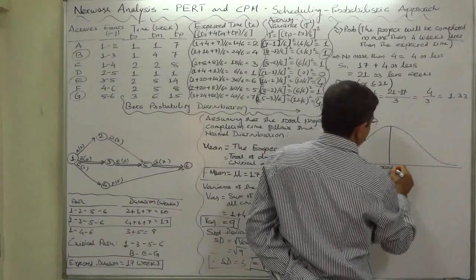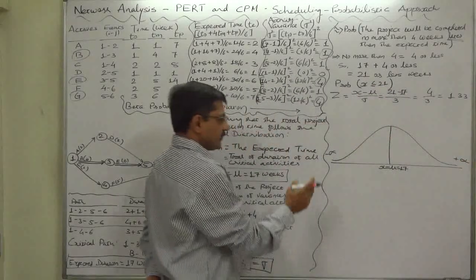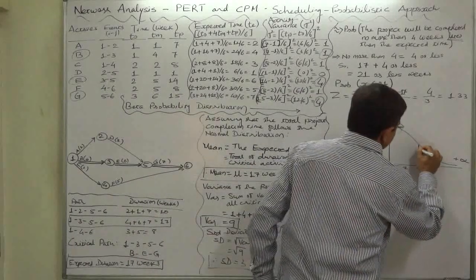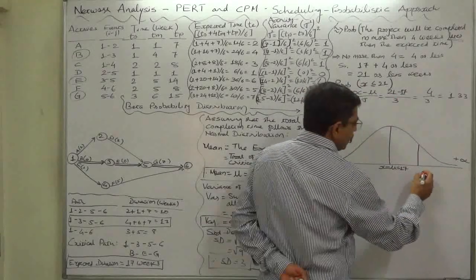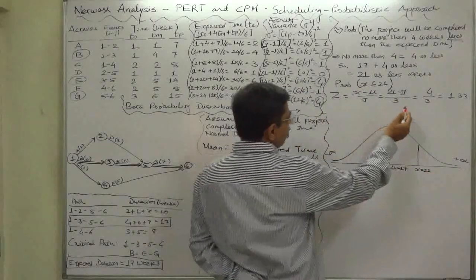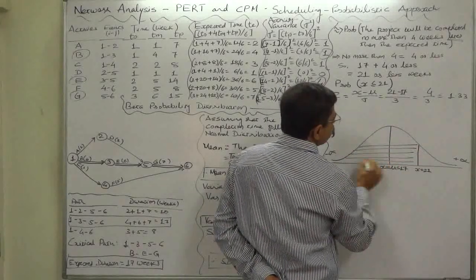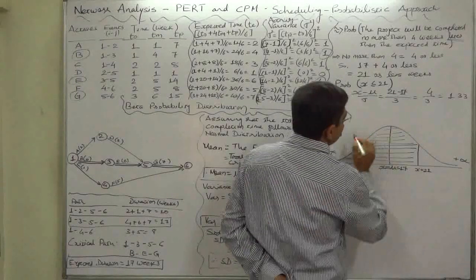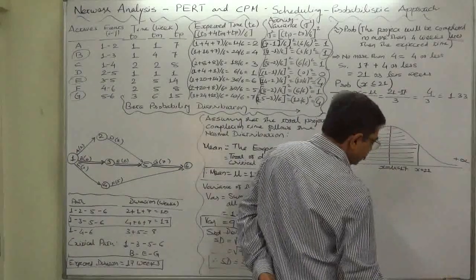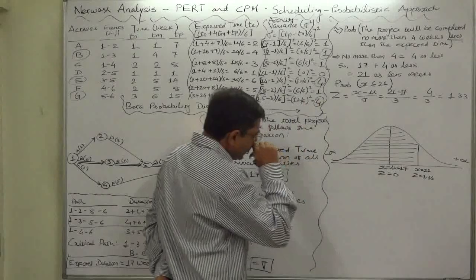X equals mu equals 17, minus infinity to plus infinity. Since x is greater than 17 or mean, it falls in the right-hand side region. X equals 21, and we are interested in less than or equal to 21, so all this area, the whole area on the left-hand side of x equals 21. Here z is 0 because x is exactly equal to the mean.